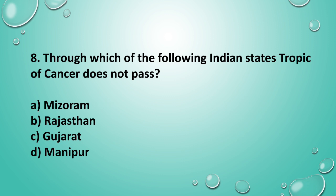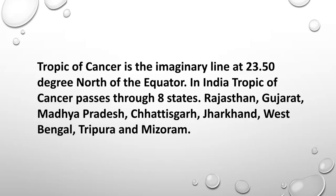Question 8: Through which of the following Indian states does the Tropic of Cancer not pass? The answer is option D — Manipur. Above all three other options, the Tropic of Cancer passes. The Tropic of Cancer is the imaginary line at 23.5 degrees north of the equator. In India, the Tropic of Cancer passes through eight states: Rajasthan, Gujarat, Madhya Pradesh, Chhattisgarh, Jharkhand, West Bengal, Tripura, and Mizoram.